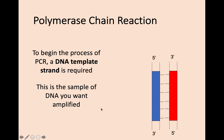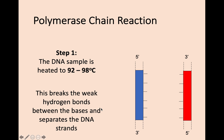To start off, an original DNA template strand is required — in this case, the DNA you want to amplify. In the first step of PCR, we use a machine called a thermocycler. The DNA sample is heated to between 92 and 98 degrees Celsius. This breaks the weak hydrogen bonds that connect the complementary base pairs of the DNA double helix, so the DNA strands are now unzipped and broken apart.